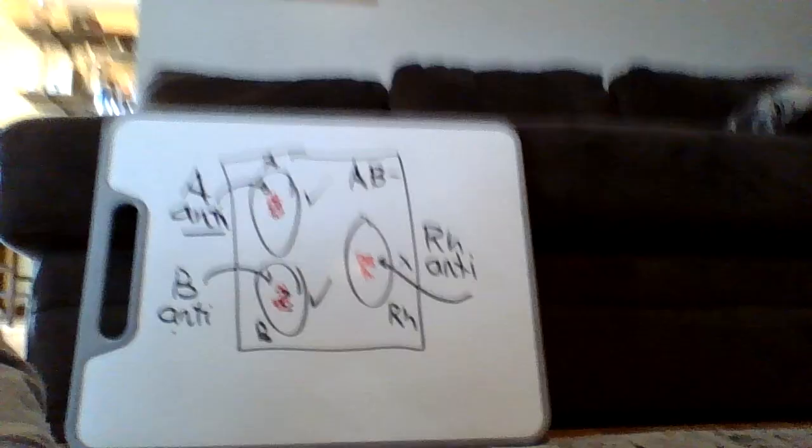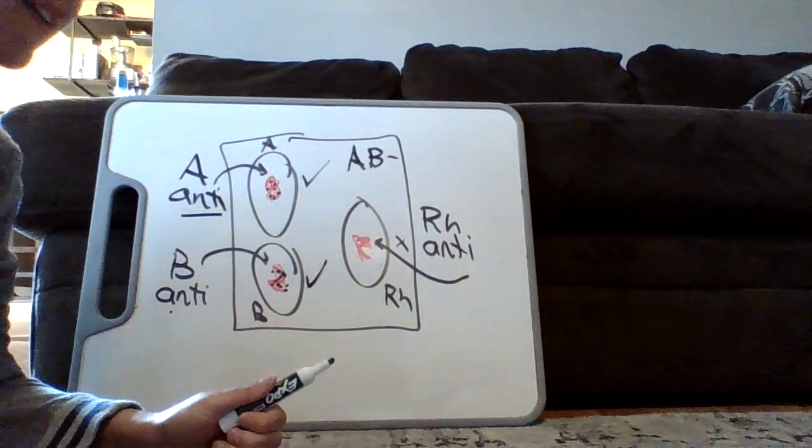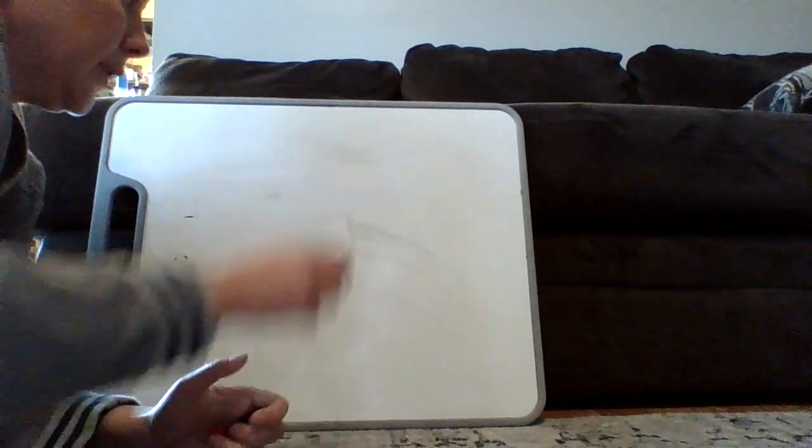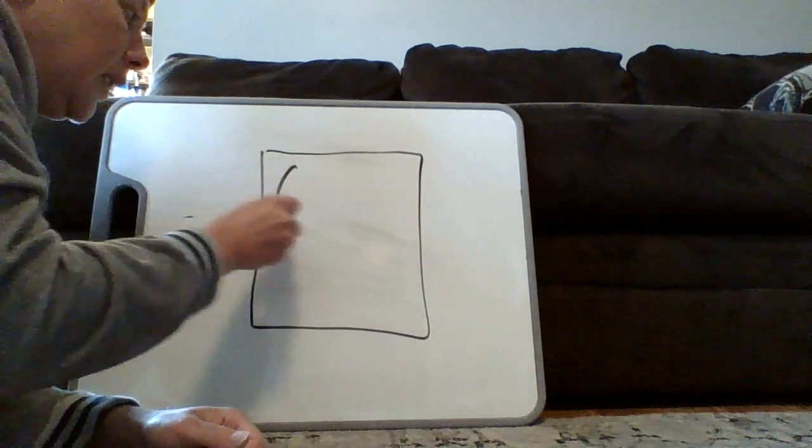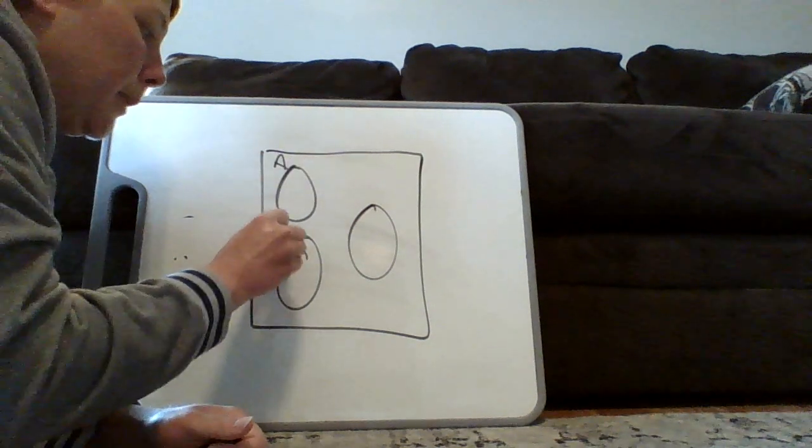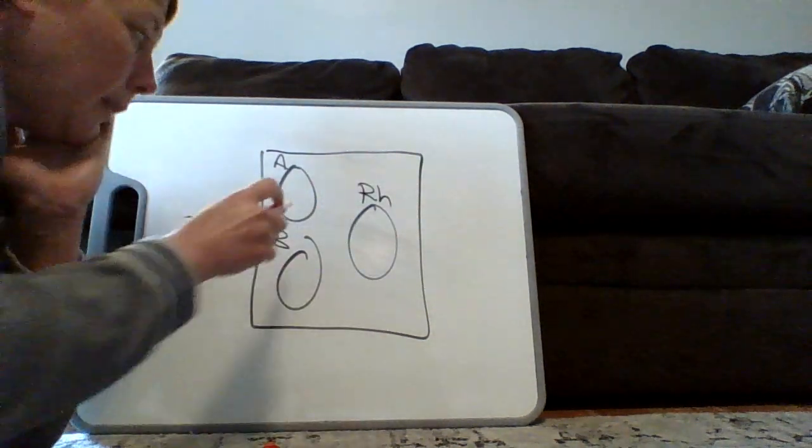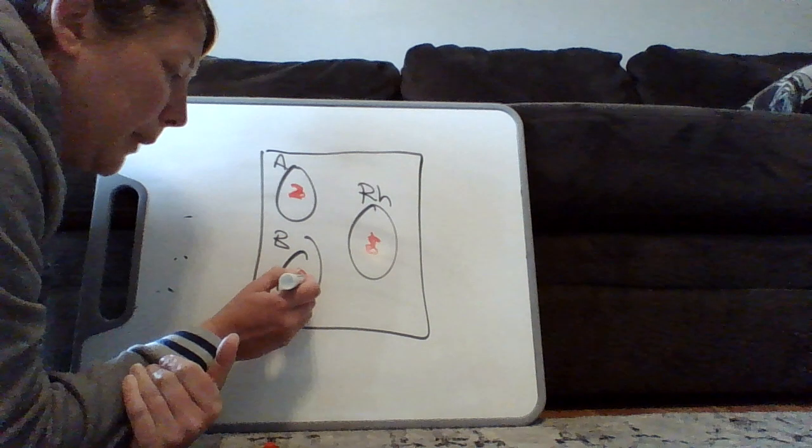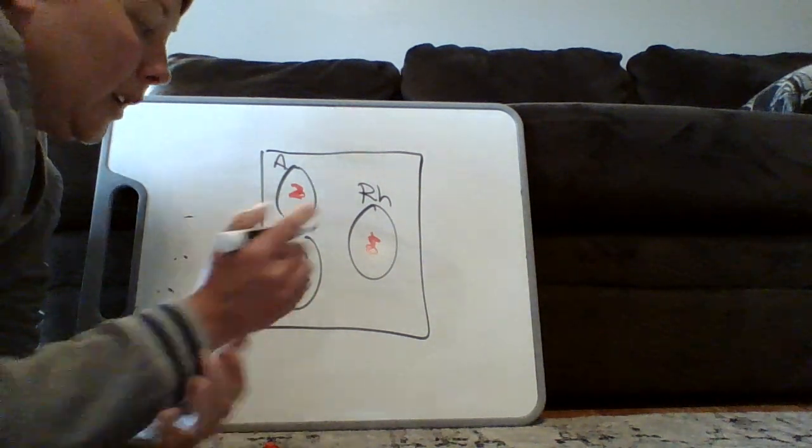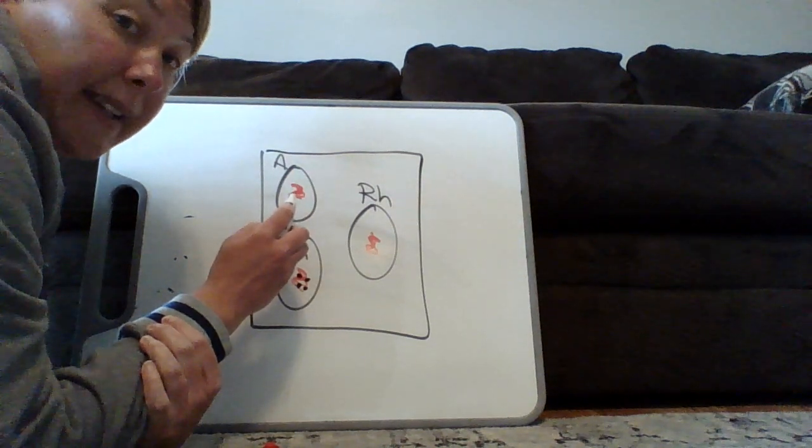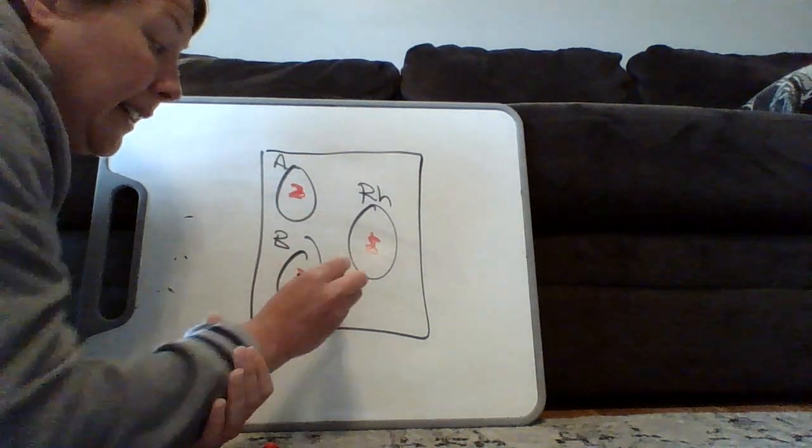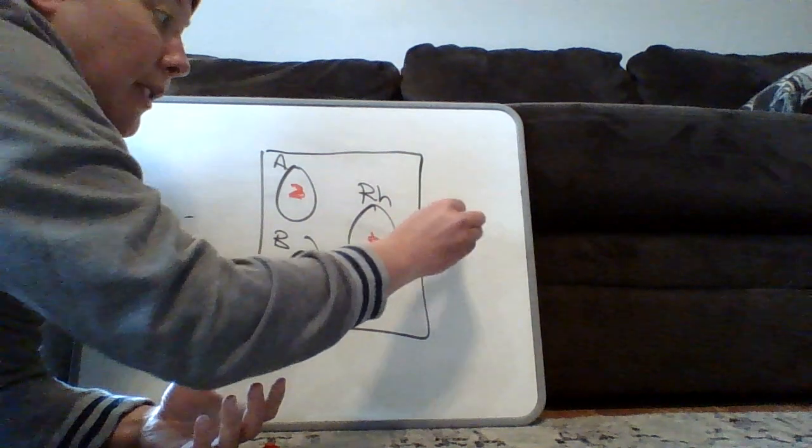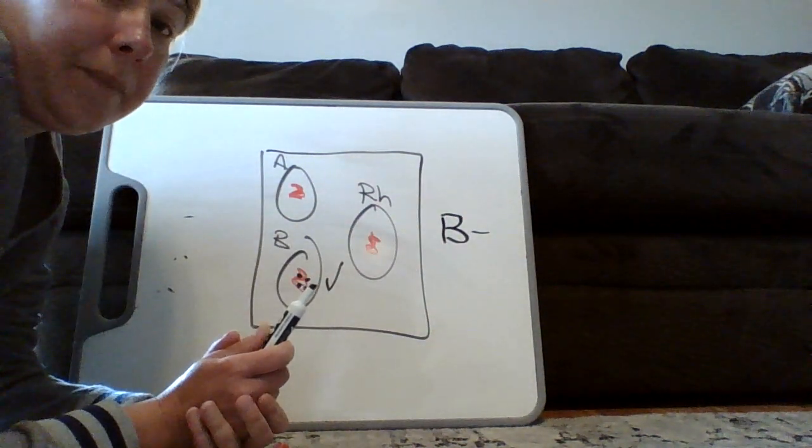So if I do another example, here's my wells again. Here's my A well, my B well, my RH well. I put blood from a patient in there and I get clumping in my B. So that means I didn't find A antibodies or antigens. I did find B antigens. I did not find RH antigens. So this person only has B antigens. So they would be B negative.